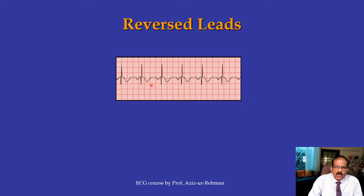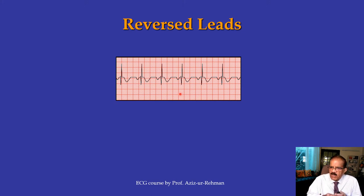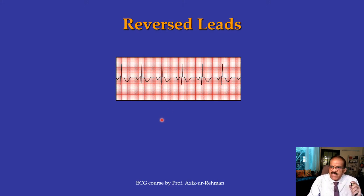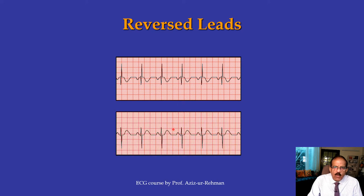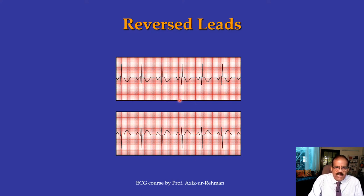A common mistake is reversal of leads. Although ECG electrodes are color-coded, humans are prone to errors. For example, if the right arm lead goes to the left arm and vice versa, ECG deflections will appear opposite. If you see this on lead one it might suggest dextrocardia. However, if you correct the error, the ECG normalizes — showing an upright P wave and QRS complex. This is called technical dextrocardia: it gives the impression of dextrocardia but is actually just a technical error.